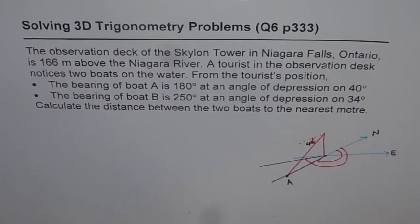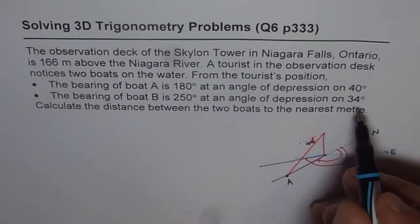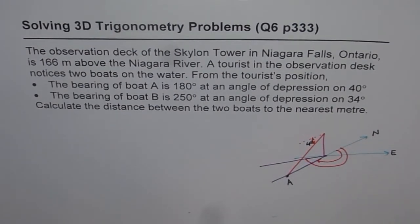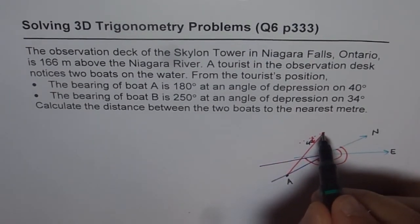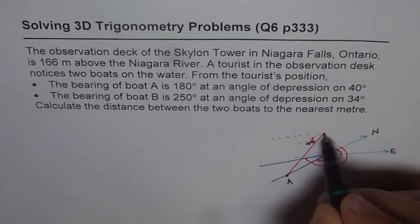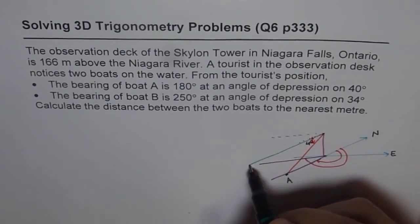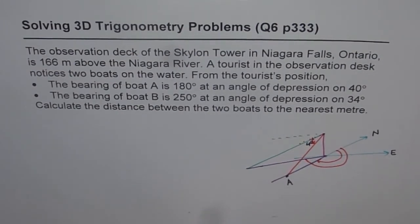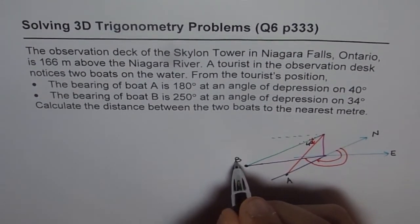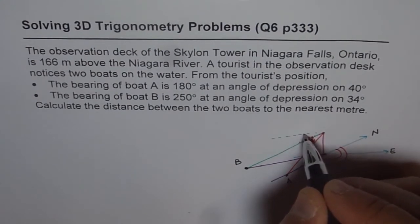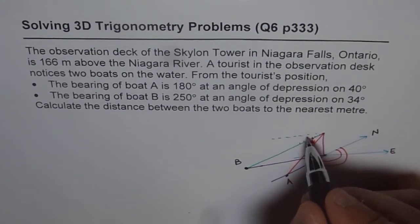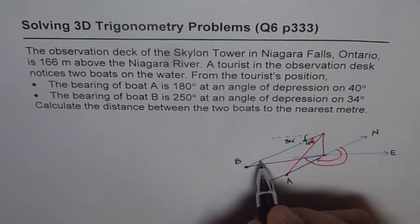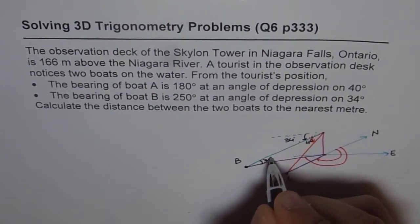For point B, the angle of depression is 34 degrees from the same point along the 250-degree bearing line. So 34 degrees is along this line, and we draw an angle of 34 degrees, giving us point B. From the top, this angle is 34 degrees. Since the two horizontal lines are parallel, the angle of elevation from B also becomes 34 degrees, and similarly the angle of elevation from A becomes 40 degrees.